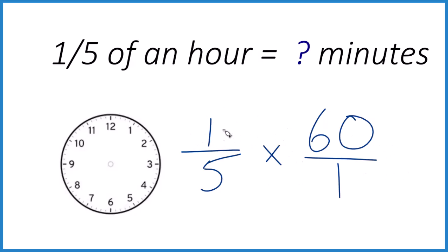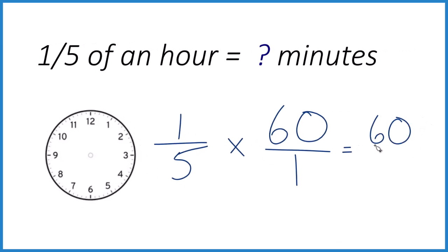When I multiply these fractions, 1 times 60 equals 60. 5 times 1 equals 5.